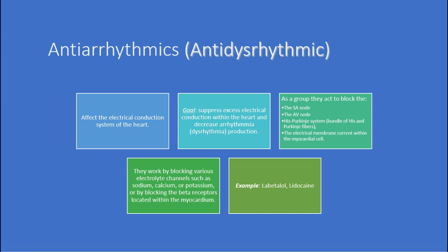Antiarrhythmic drugs affect the electrical conduction of the heart. The goal is to suppress excessive electrical conduction within the heart and decrease arrhythmias or dysrhythmias. As a group, they act to block the SA/AV node, the bundle of His, and the electrical membrane current within the myocardial cells. They work by blocking various electrolyte channels such as sodium, calcium, and potassium, or by blocking the beta receptors within the myocardium. Lidocaine and Lopressor are common examples.